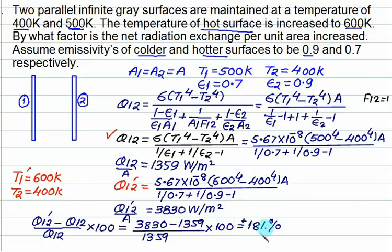Remember the formula Q12 = sigma × (T1^4 - T2^4) × A / (1/epsilon_1 + 1/epsilon_2 - 1) for quick calculation with flat parallel plates.